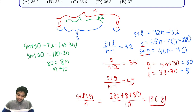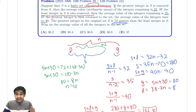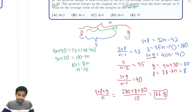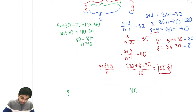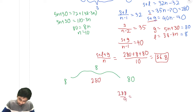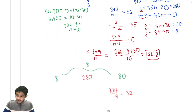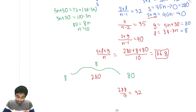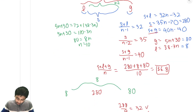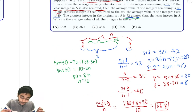To avoid silly mistakes, a good strategy is to plug back in and verify. We have 10 integers, least is 8, greatest is 80, and the 8 middle integers have a sum of 280, so their average is 35. Removing the greatest leaves 9 integers with sum 288, and 288 divided by 9 equals 32 — first condition satisfied. Removing the least leaves 280 divided by 8 equals 35 — second condition satisfied. Adding the greatest back gives sum 360 over 9 equals 40 — third condition satisfied. We're confident the answer is correct.